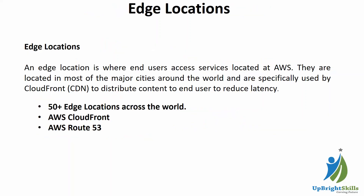Edge locations are where end users access AWS services. They are located in major cities around the world and are specifically used by CloudFront — the content delivery network — and AWS Route 53 to distribute content to end users with reduced latency. If you have a website in India, you can use CloudFront to distribute its content globally, so that if it is loaded from the US or UK, the content is served directly from the nearest edge location rather than traveling all the way to India.